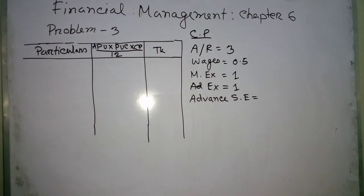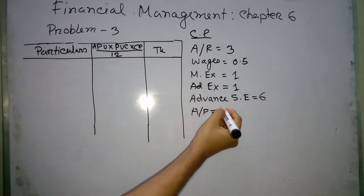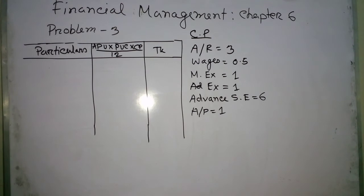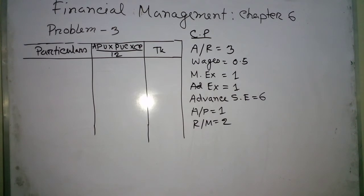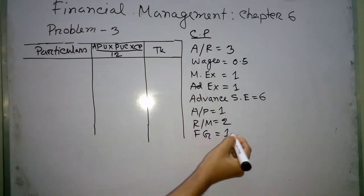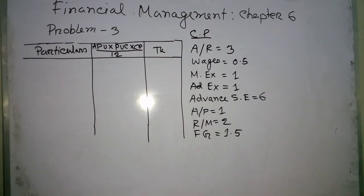Sales promotion expense paid half-yearly in advance. The company enjoys one month credit — accounts payable one month credit from the supplier. Raw material stock — two months. Raw material stock for finished goods — one and a half months. Cash balance maintained at one lakh as a precautionary measure.